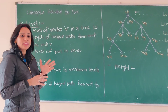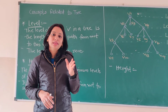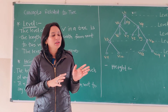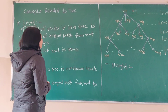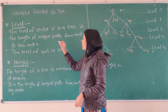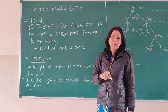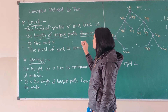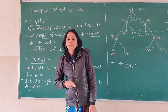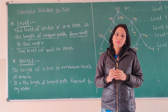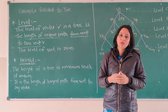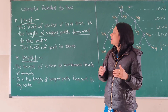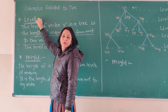Now we will see the concepts related to tree. We have seen various concepts of graph also, and the same relevant concepts apply to tree, starting with the label. The label of vertex V in a particular tree is the length of the unique path from the root to that particular vertex. If the root node is V0, then the unique path from V0 to vertex V is the label of that vertex.